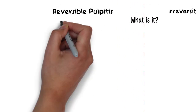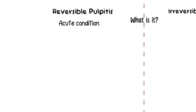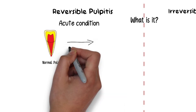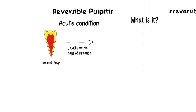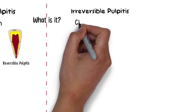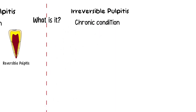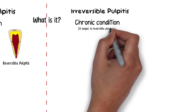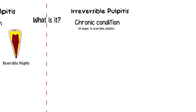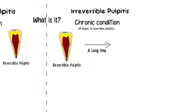Reversible pulpitis is the acute condition of the pulp, meaning that as soon as the pulp gets inflamed, the first stage it goes through will be the reversible pulpitis state. The pulp essentially goes into an inflammatory mode usually within days of the irritation. Irreversible pulpitis, on the other hand, is a chronic condition and is mostly a sequel to reversible pulpitis, meaning that if a tooth suffering from reversible pulpitis remains unresolved, it may progress and become irreversibly inflamed.